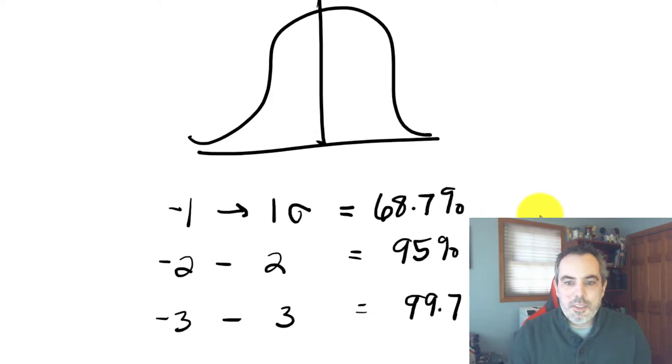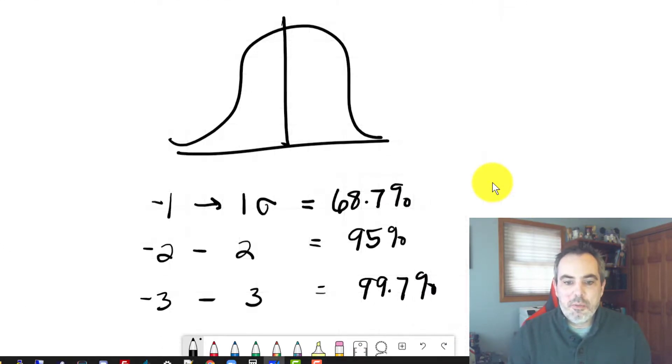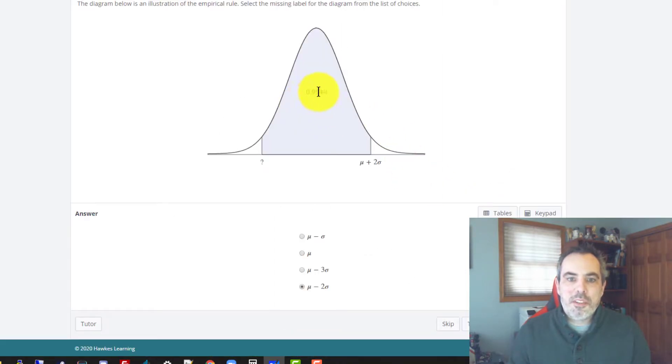Quite honestly, I think we even simplified it a little bit more and just called this the 68, 95, 99.7 rule. So when I'm looking at this, I'm thinking about that percentage, 95%. That's between two standard deviations, μ plus 2, μ minus 2.